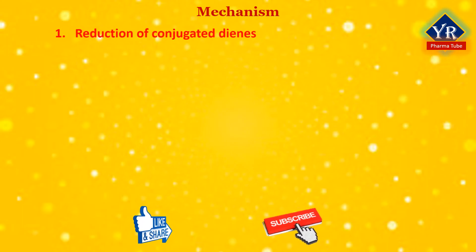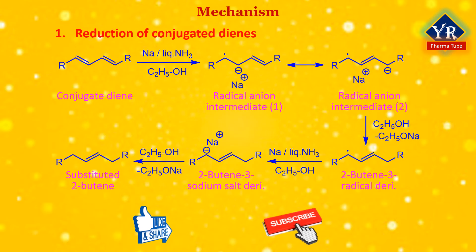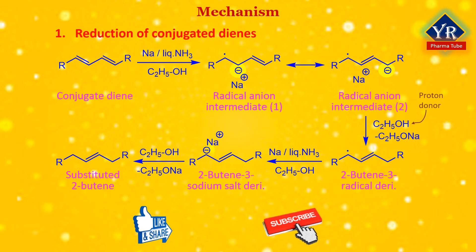Coming to the first mechanism — reduction of conjugated dienes. The reaction between a conjugated diene and sodium metal in the presence of liquid ammonia gives a radical anion intermediate 1, which gets interchanged to intermediate 2. The resulting radical anion intermediate 2, on being treated with ethanol which acts as a proton donor, eliminates a mole of sodium ethoxide, thereby forming a 2-butene-3-radical derivative. This on further treatment with liquid ammonia and sodium metal gives the 2-butene-3-sodium salt derivative, which on reaction with ethanol loses a mole of sodium ethoxide to give the desired product — substituted 2-butene.